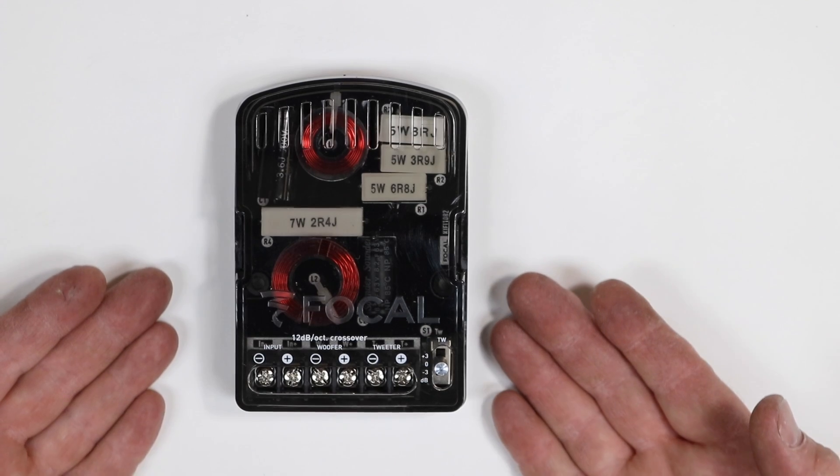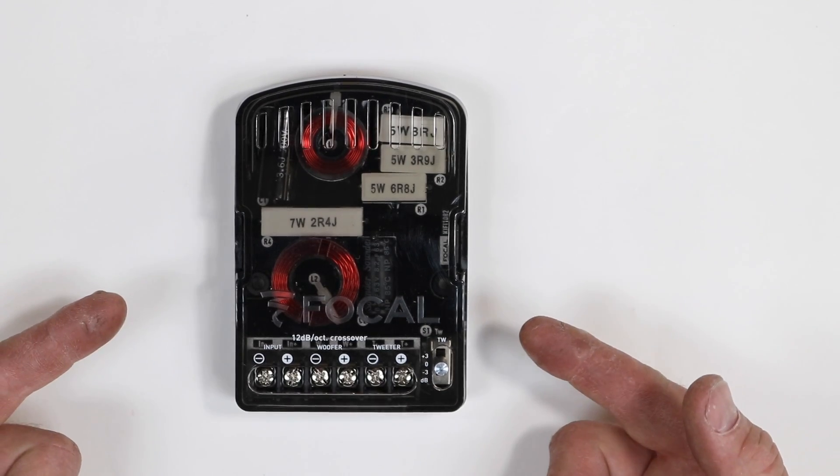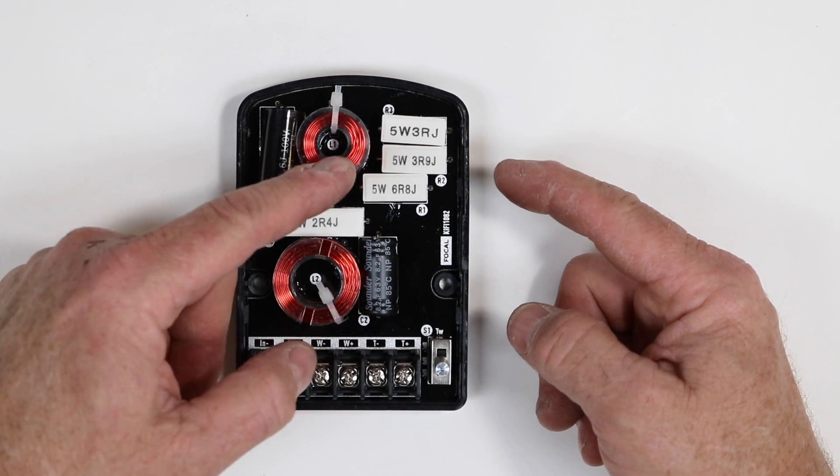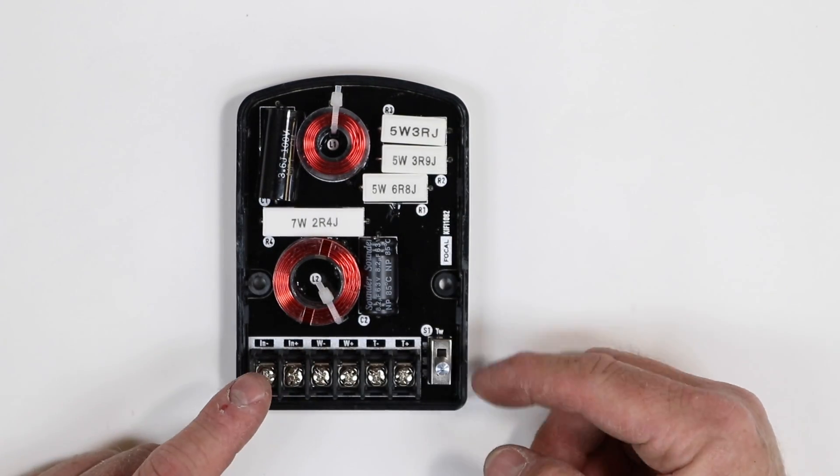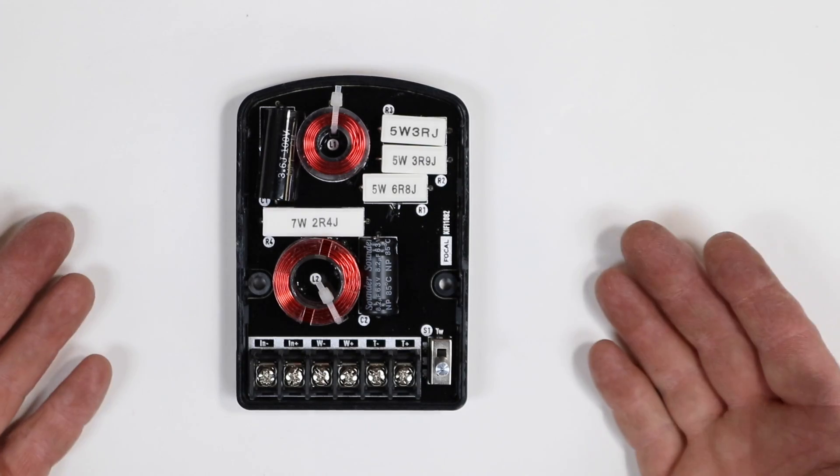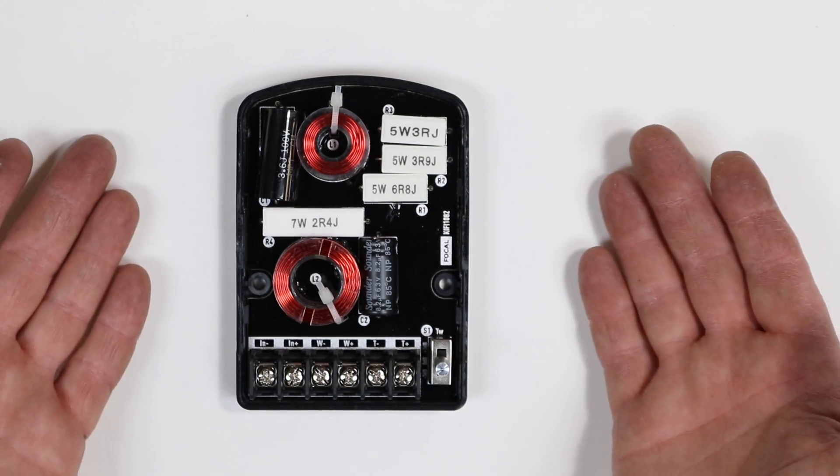This is a passive crossover network. Inside of it is caps, coils, resistors, switches, screws, all kinds of neat things that make your speakers sound better.